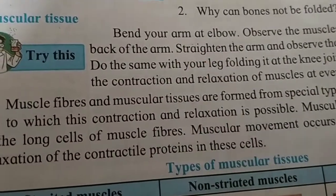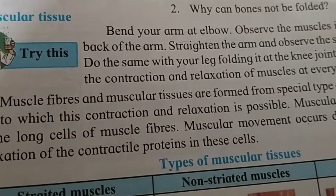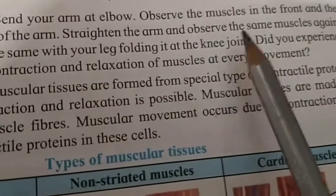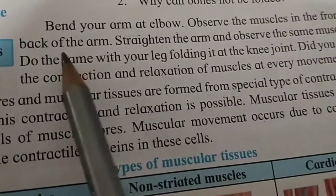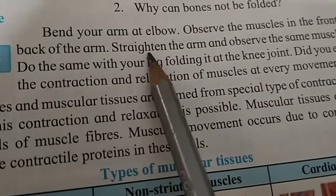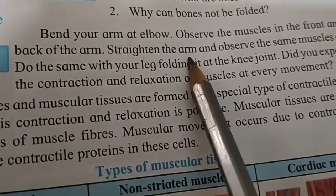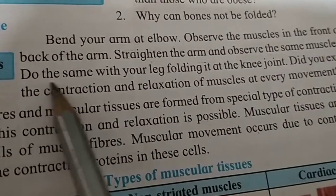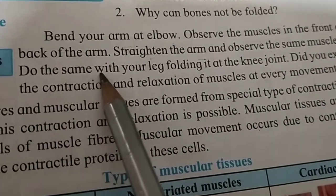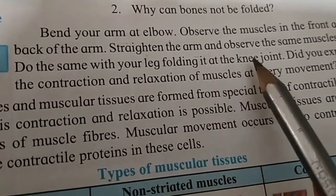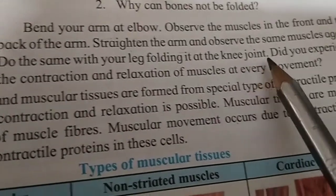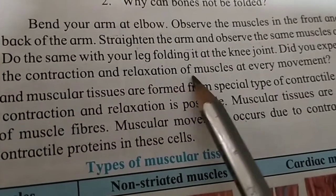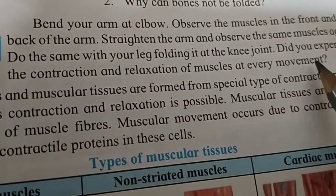Bend your arm at the elbow. Observe the muscles in the front and the back of the arm. Now straighten the arm and observe the same muscles again. Do the same with your leg, folding it at the knee joint. Do you experience contraction and relaxation of the muscle at every moment?